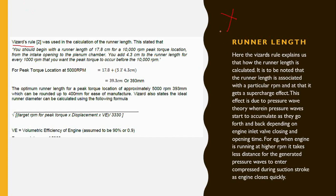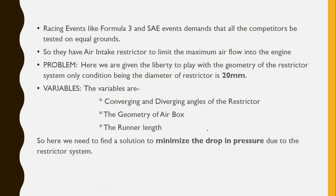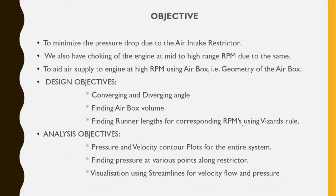Here is the problem definition. The variables are the converging and diverging angles, the geometry of the airbox, and the runner length. The only constraint is the 20mm diameter restriction. Our aim is to minimize the pressure drop due to the air intake restrictor, address engine choking at mid-to-high RPM range, and aid air supply at higher RPM using the airbox as a reservoir. Design objectives include finding the optimal converging and diverging angles, airbox volume, and runner length. Analysis objectives include obtaining pressure and velocity contours and finding pressure at various points.